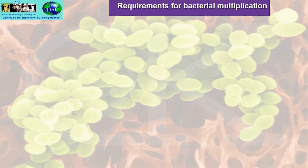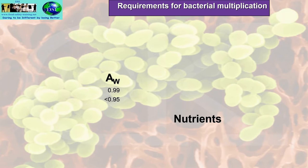What are the requirements for bacterial multiplication? We need nutrients. First of all, moisture content — AW, the moisture content, needs to be between 0.95 and 0.99. Anything lower than that is too dry for bacteria to survive.